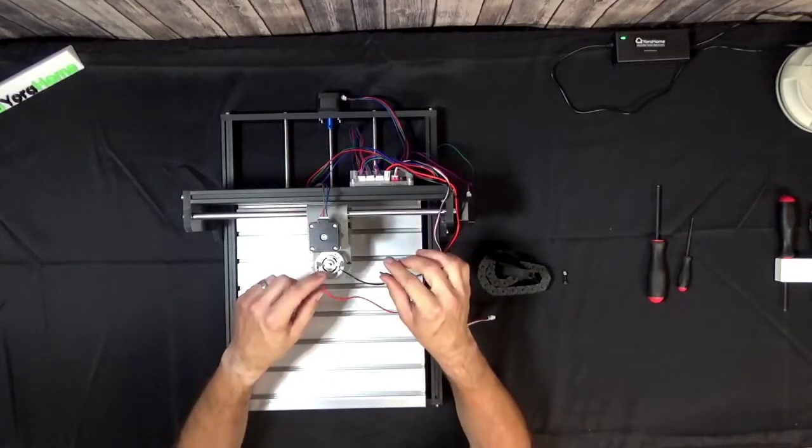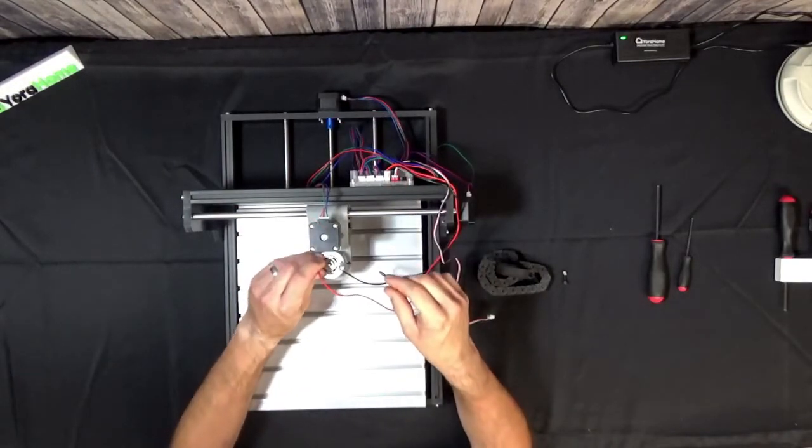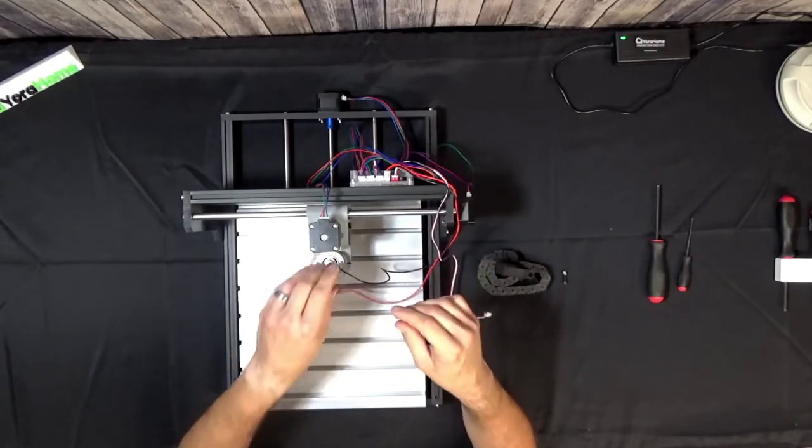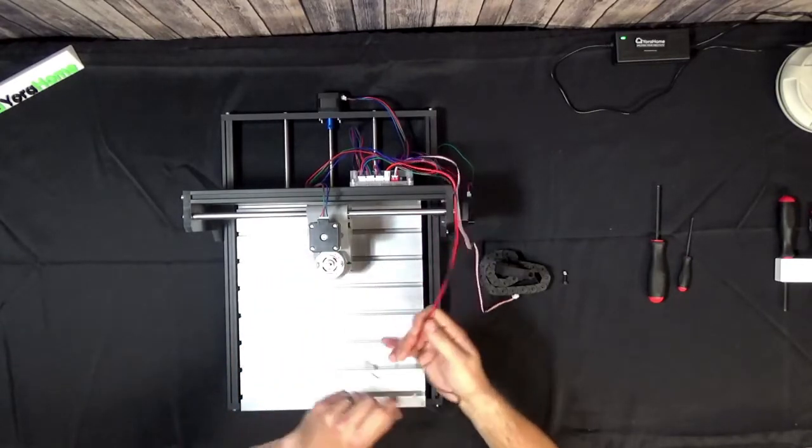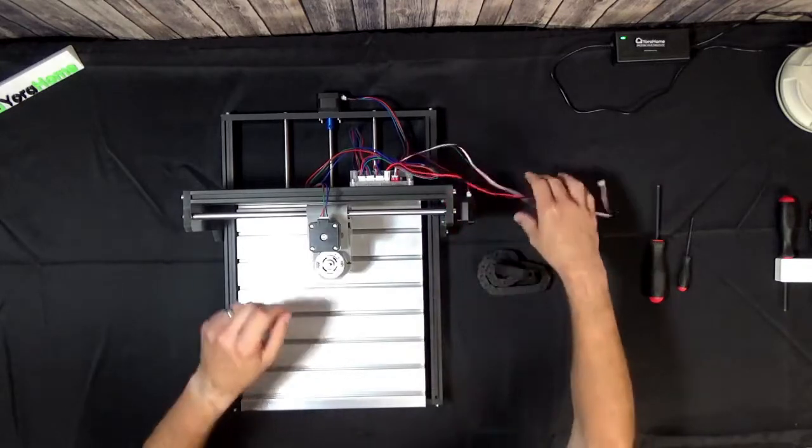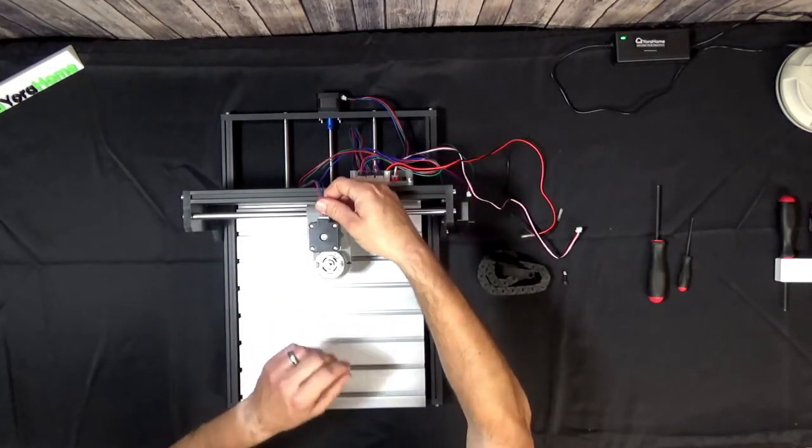First thing you're going to want to do: disconnect all of the wires to your spindle and to your z-axis stepper motor.